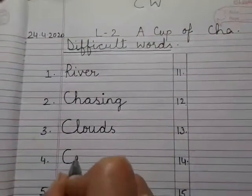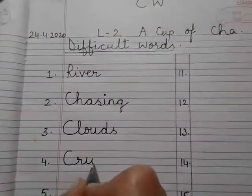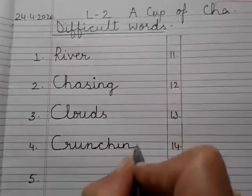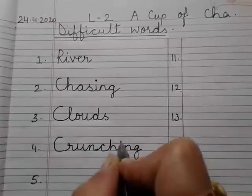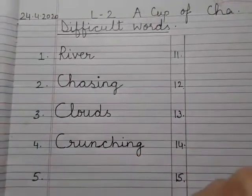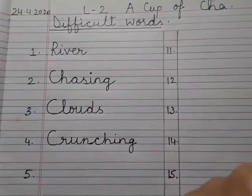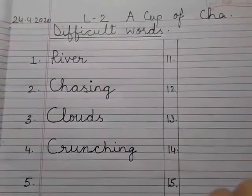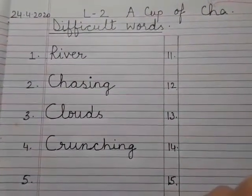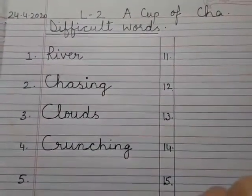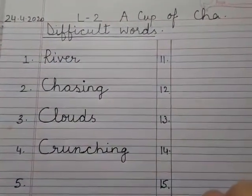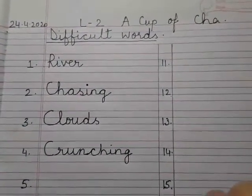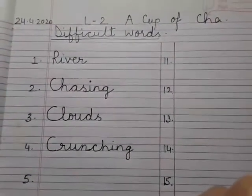Crunching — ek awaaz hoti hai. Jaise aap kurkure khate ho toh awaaz aati hai. Sukhe patto ko pair ke niche se kuchlo ge toh awaaz aayegi na. Use kehte hain crunching. Apple khao ge toh awaaz aati hai, papar khao ge toh awaaz aayegi — voh hota ek crunching sound.